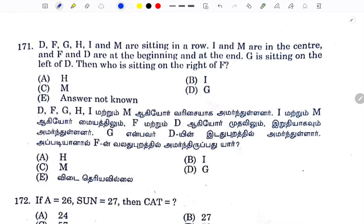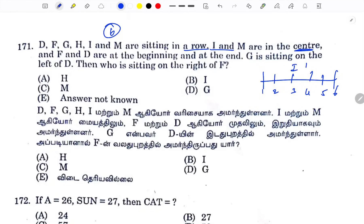D, F, G, H, I, M — 6 members in a row. I and M are in the middle (center positions 3 and 4). F is at the beginning and D is at the ending. G is to the left of D. F is to the right of D. H is to the left of D. That is the answer.